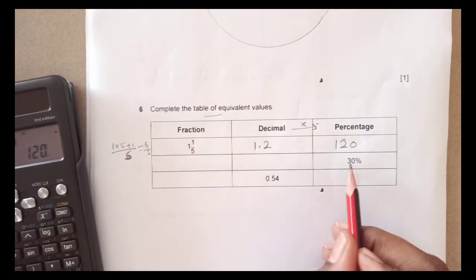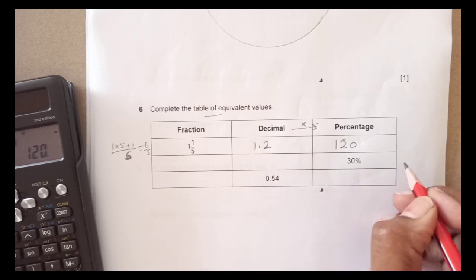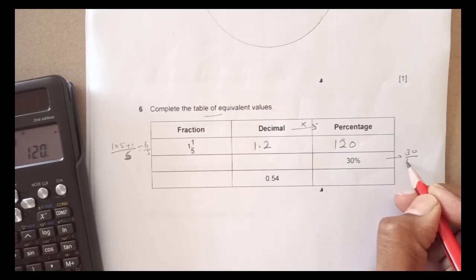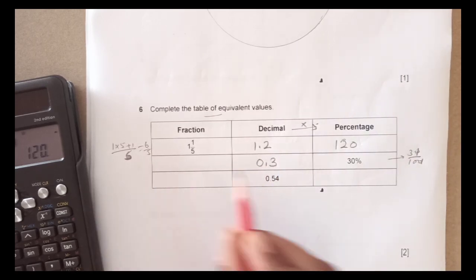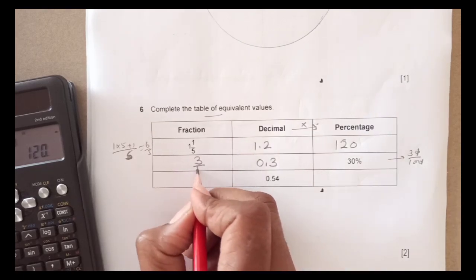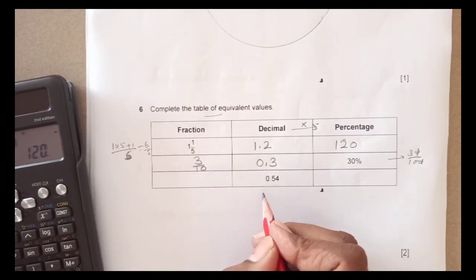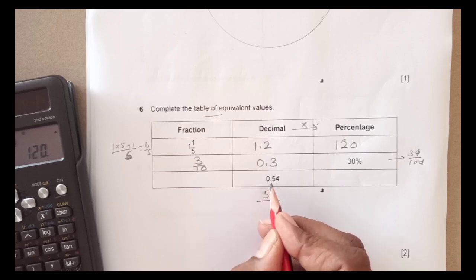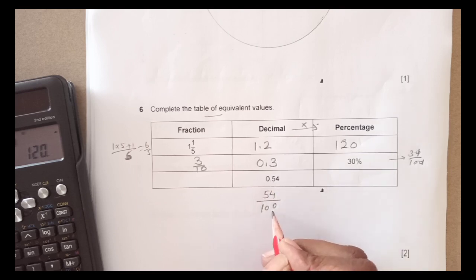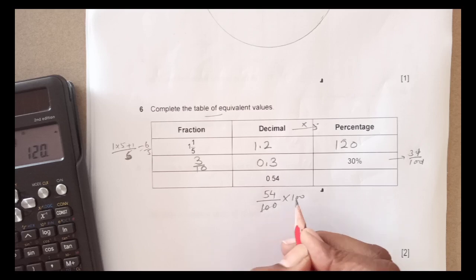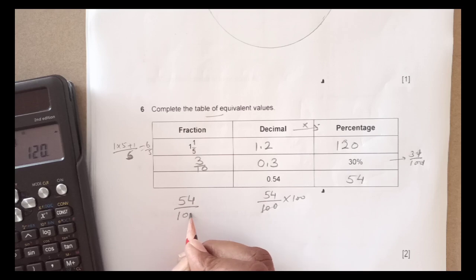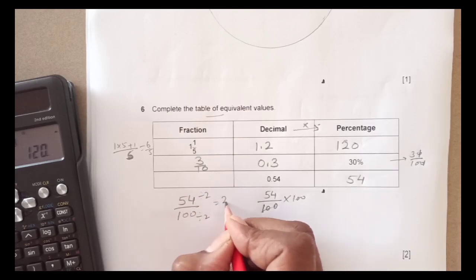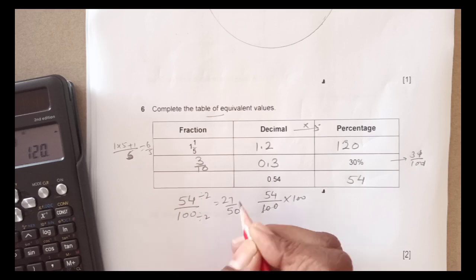For the second row, 30% as a decimal is 30 over 100 which equals 0.3, and as a fraction simplified is 3 over 10. For the third row, the decimal 0.54 — there are two digits after the decimal point, so multiplying by 100 gives 54, meaning 54 over 100. Dividing by 2 gives 27 over 50, which cannot be simplified further. So 27 over 50 is the answer.